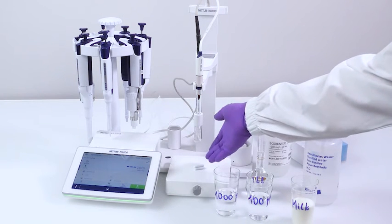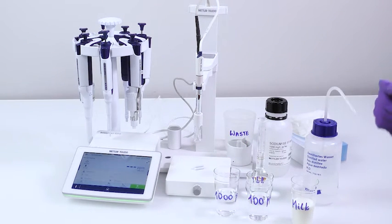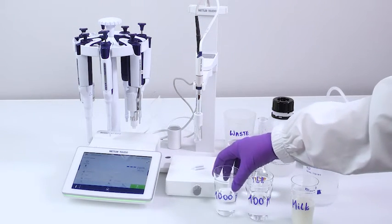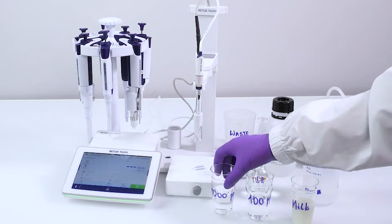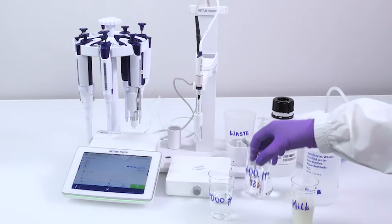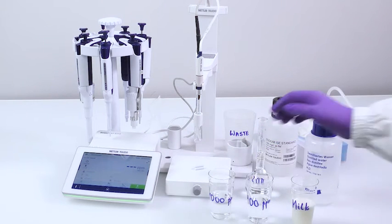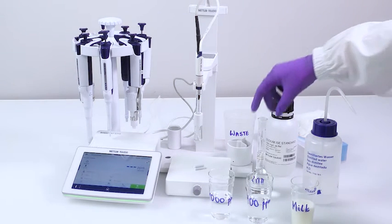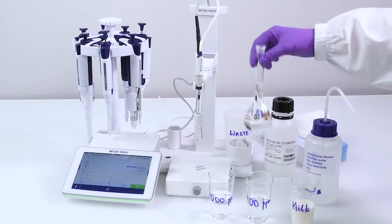Moving on to solutions, you need to have the calibration standard of 1000 ppm and 10 times diluted to 100 ppm, and of course your sample of milk. Further, you will also require the ionic strength adjuster prepared from ammonia, ammonium chloride, and distilled water.